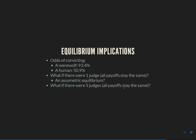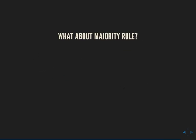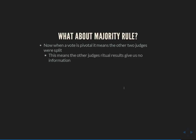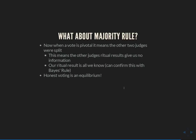A question to think about: what if there were five judges instead of three with the same payoffs — do things get worse or better? Now let's talk about what happens if instead of unanimous rule, we required majority rule. Majority rule has a great property: your vote is pivotal exactly when everyone else is evenly split. Under majority rule with three judges, you're only pivotal when one other judge voted to release and one voted to convict. That means the other judges' ritual results balanced out and give us no information — so our ritual result is all we know. You can confirm this with Bayes' rule.